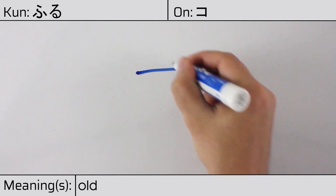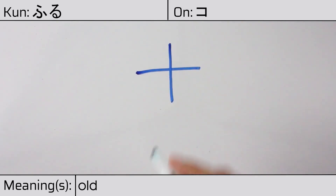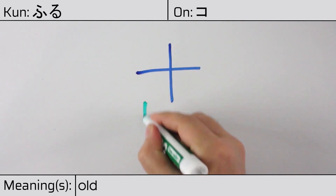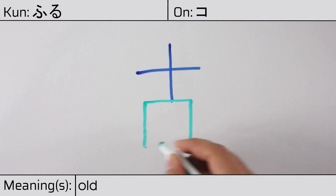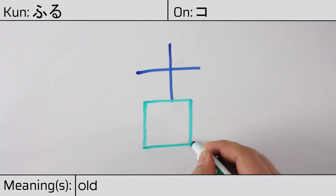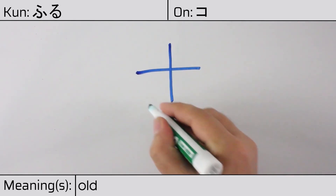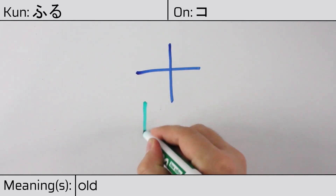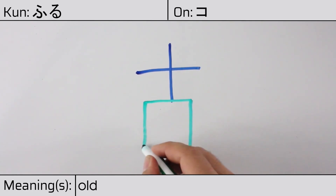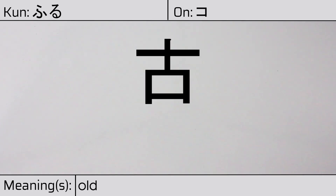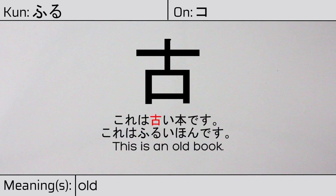This character is made up of the following radicals or parts: kanji jiu or ten, followed by mouth kuchi. You can remember this kanji by the following hint: many words spoken in the past. Our example sentence is: This is an old book.